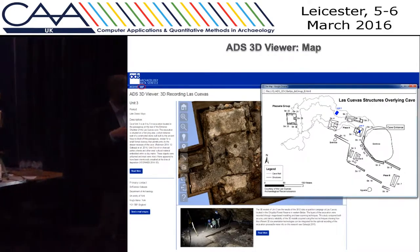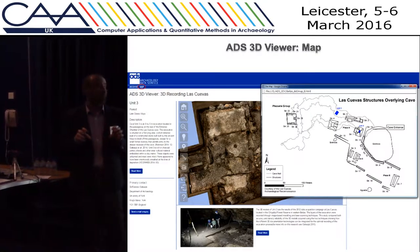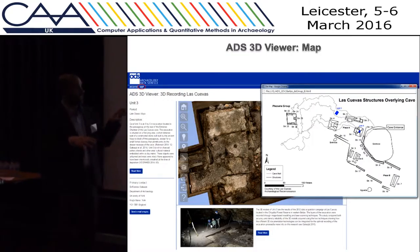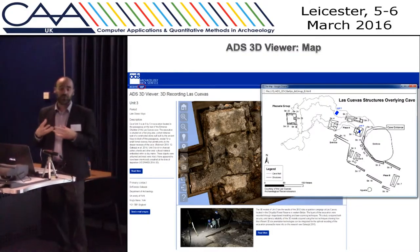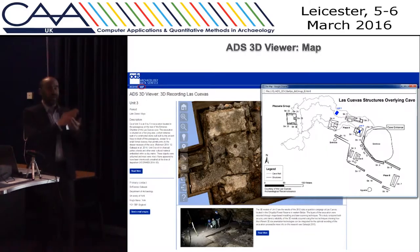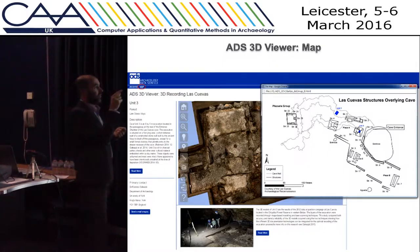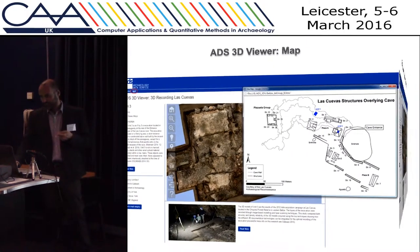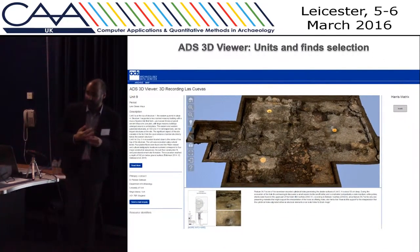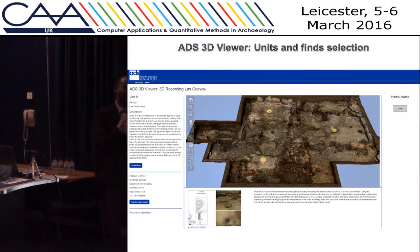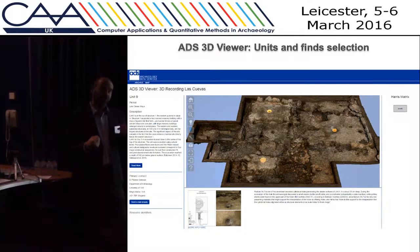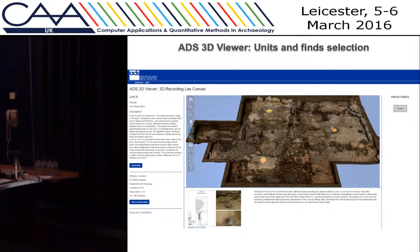To access the data, we divided the visualization into different parts of the site using a 2D map. On the 2D map you can select which area of the site you want to access. We did this because it's very difficult to visualize many high-resolution models in the same window. Another very interesting tool is the units and file selection: hotspots on the model allow you to select a point and open information about that specific find or unit archived in ADS — including images, text, and 3D models of artifacts.